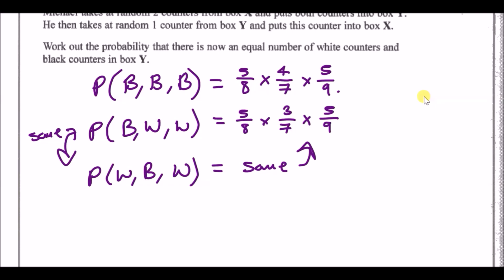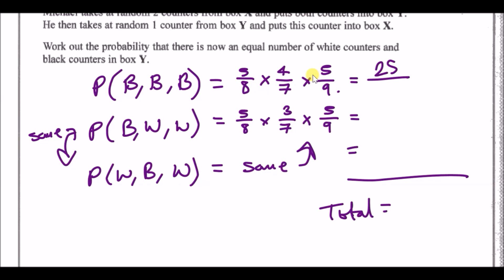Now just calculate each probability and total them up. The two-blacks scenario gives 25/168, and each of the black-white scenarios also gives 25/168. The bottom ordering gives the same result. Add all three probabilities together.